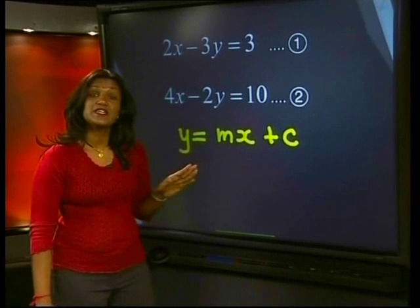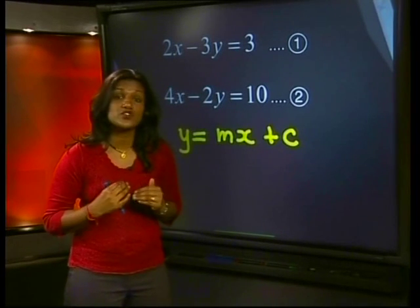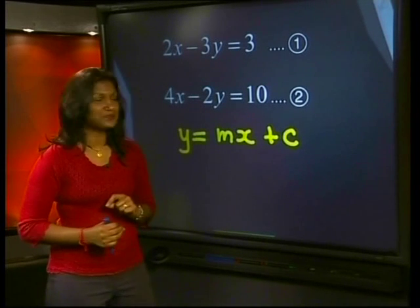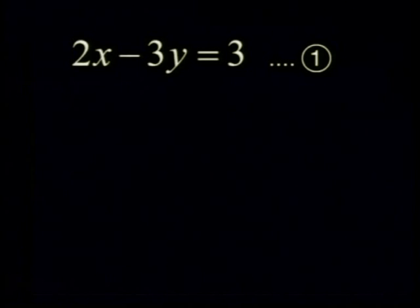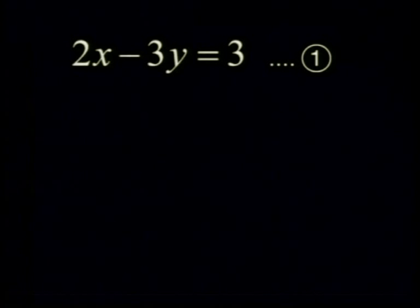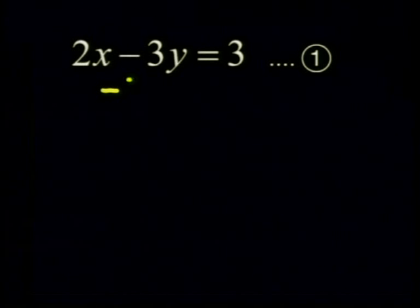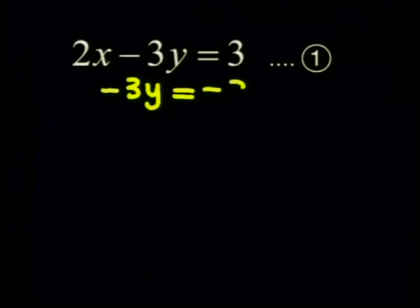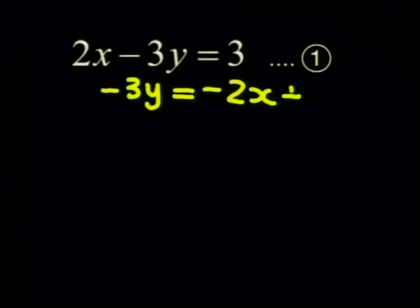Basically this means that we need to write each of the equations with only y on the one side. Let's begin with equation 1. So we'll start by adding negative 2x to both sides of the equation. This gives us negative 3y is equal to negative 2x plus 3.